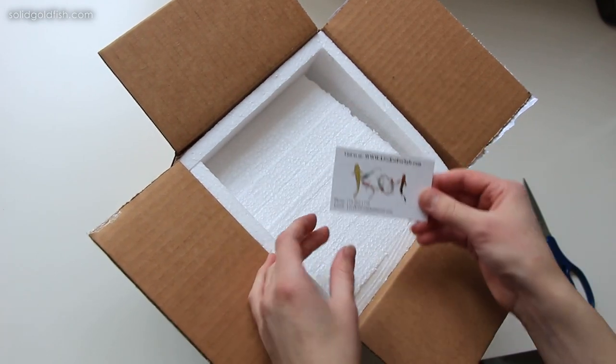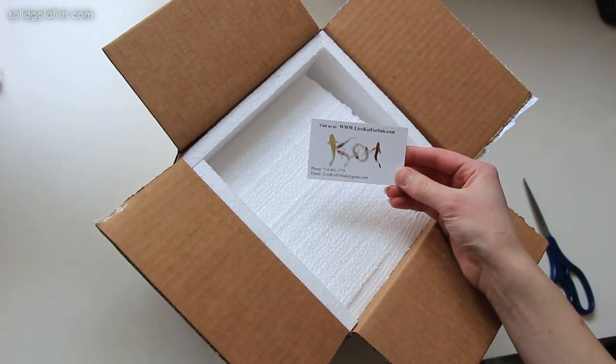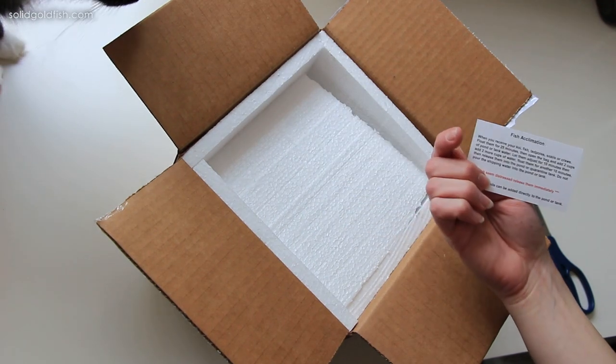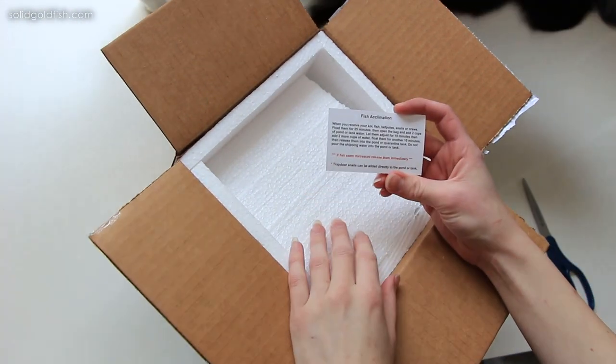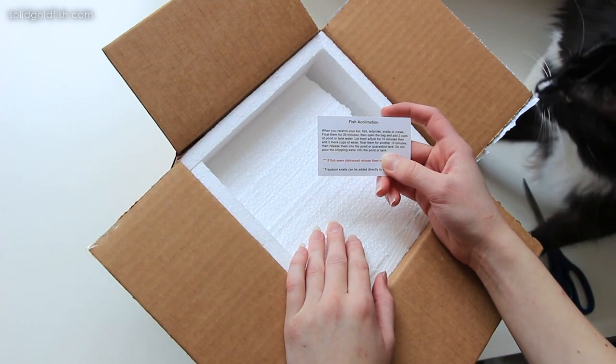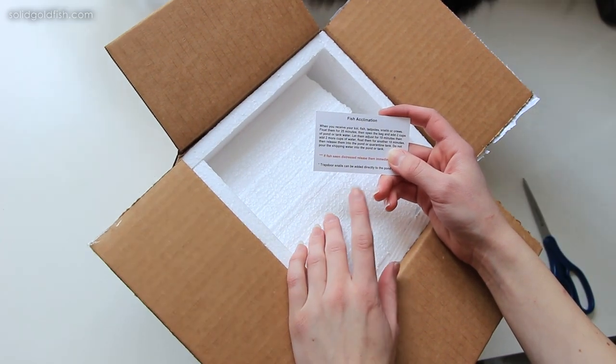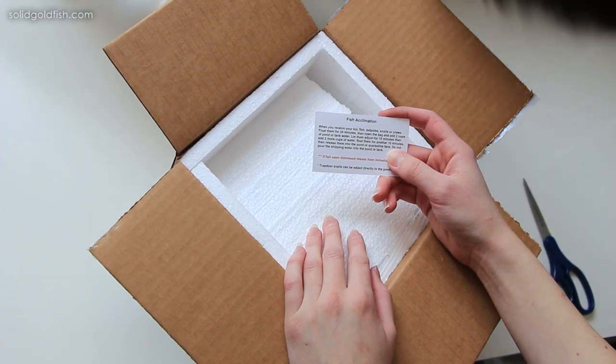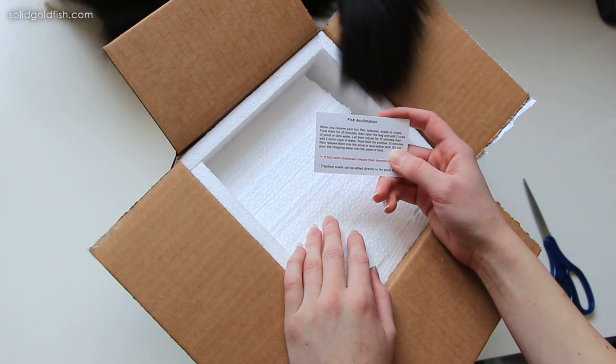So here's what the inside looks like. They have their business card there, Live Koi for sale. And they have some information on fish and other animals like they say koi, fish, tadpoles, snails, or craws acclimation.